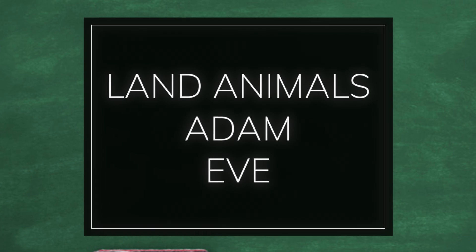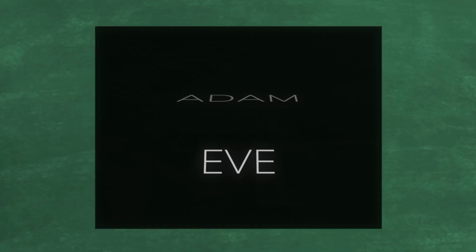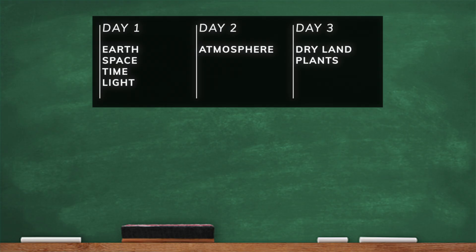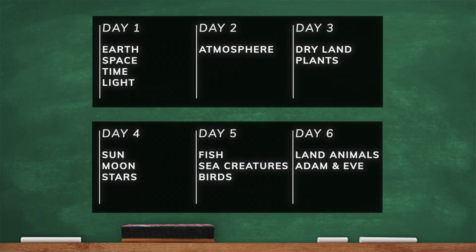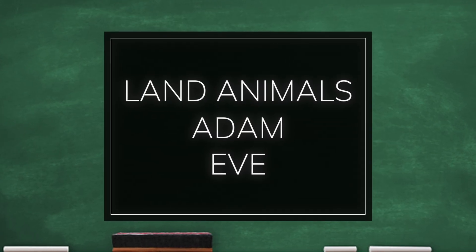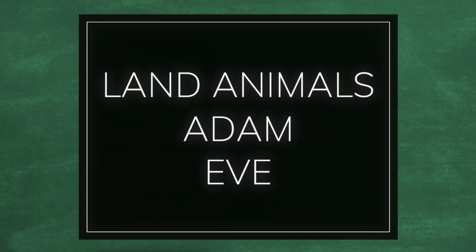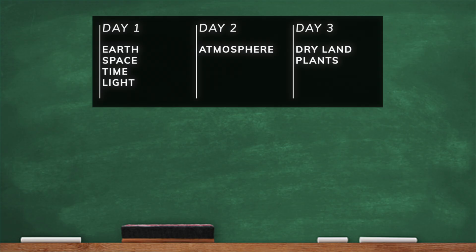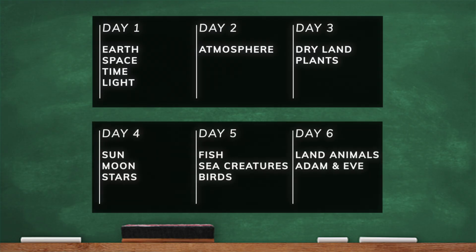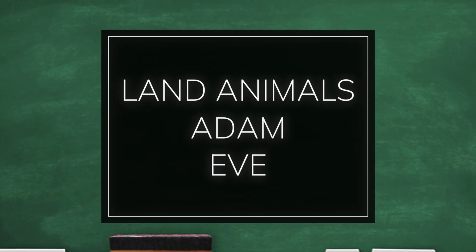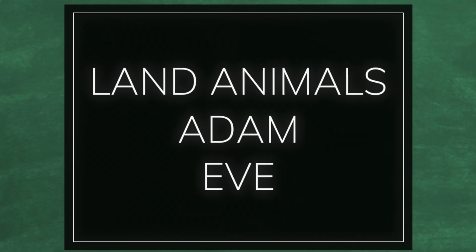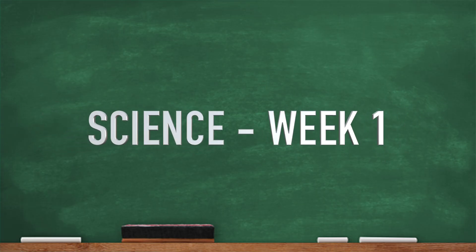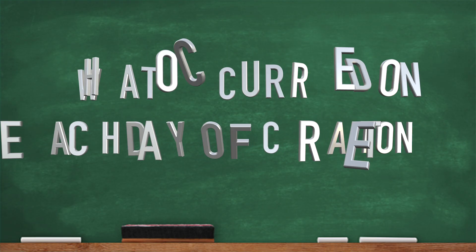Day one: earth, space, time, light. Day two: atmosphere. Day three: dry land. Day four: sun, moon, and stars. Day five: fish, sea creatures, and birds. Day six: land animals and Adam and Eve. All right, that's science — six days of creation. That's what happened.